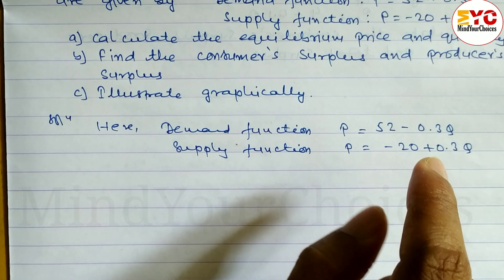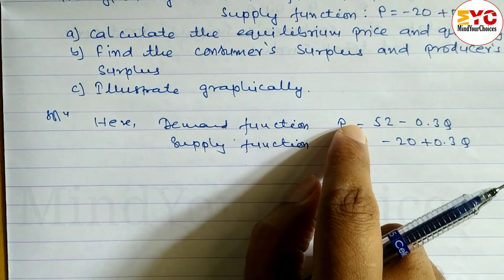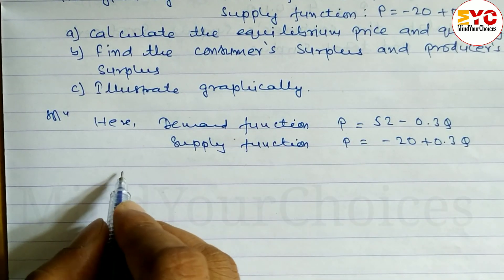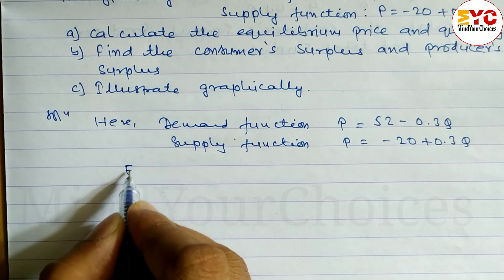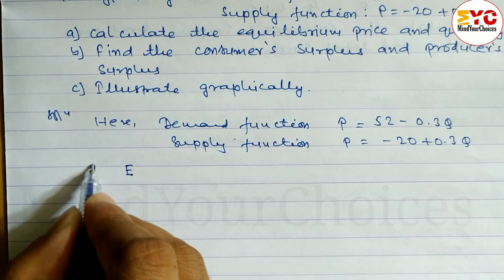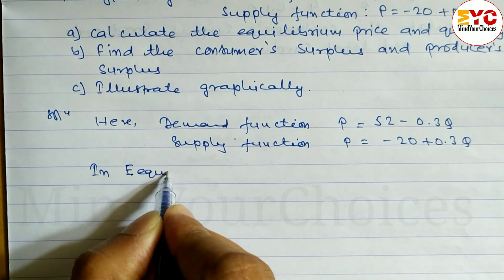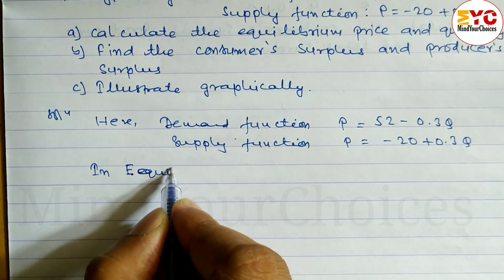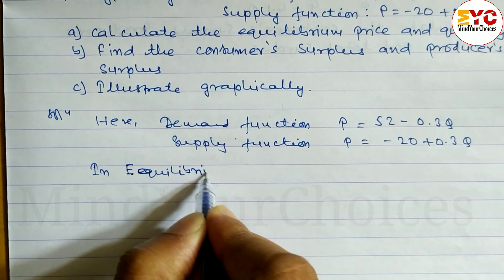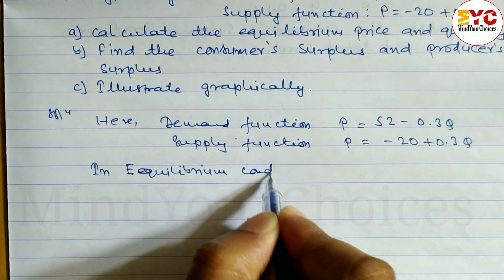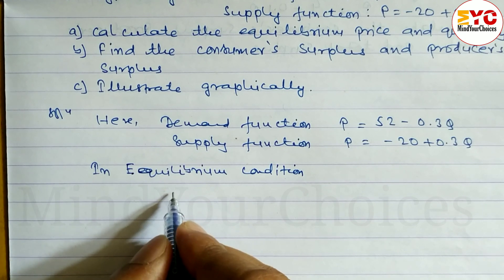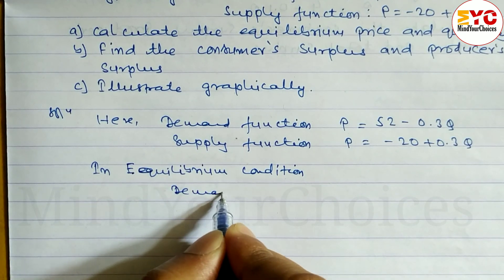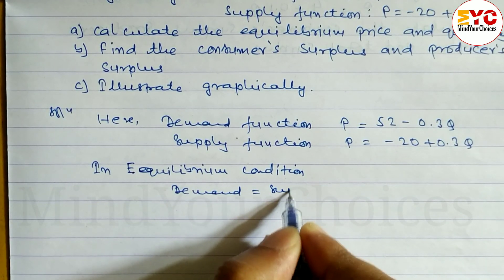For the market equilibrium, we set the demand function equal to the supply function. So we can write here: in equilibrium condition, the demand and supply both will be equal. So we can write: demand is equal to supply.